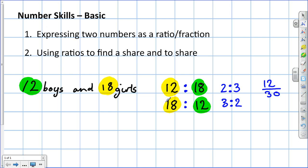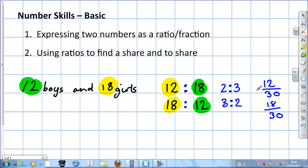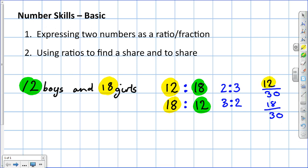Likewise, what fraction of the class are girls? It's 18 out of 30, there are 30 in the class. If we stop for a moment, to turn the ratio into a fraction, we take whichever it is that we're interested in, in this case it's the boys, we make that our numerator, but the denominator is the total.